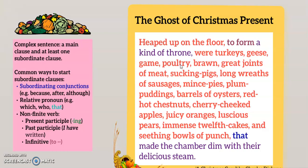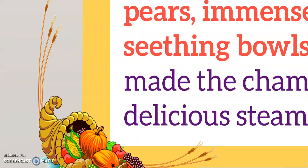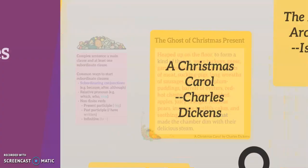Dickens wants us, as we read, to imagine the food heaped upon the floor, forming a throne. The subordinate clause at the end appeals to the sense of sight and the sense of taste. The food is tempting and Dickens wants the reader to enjoy this imagery.